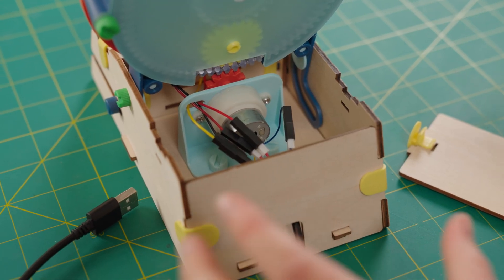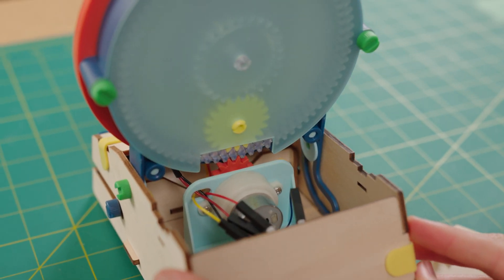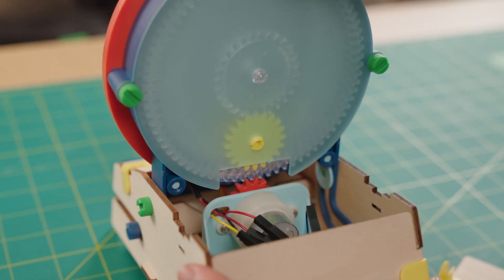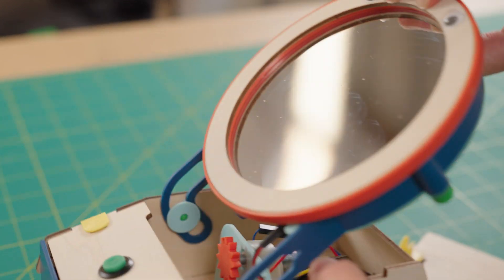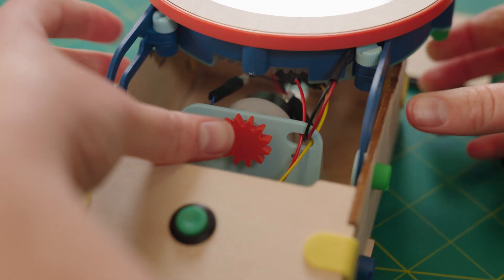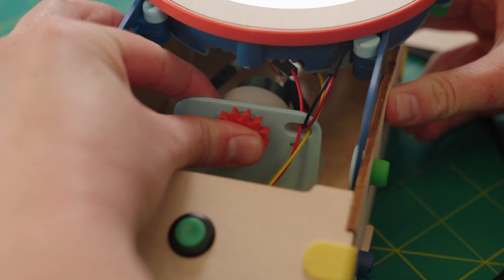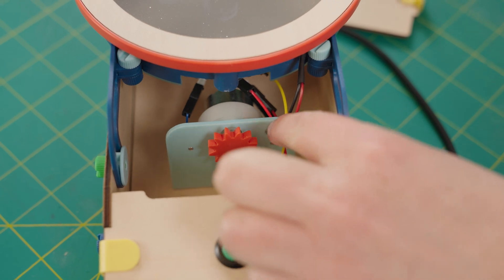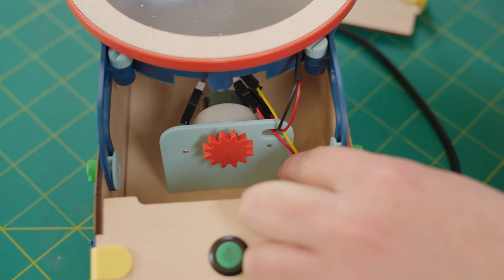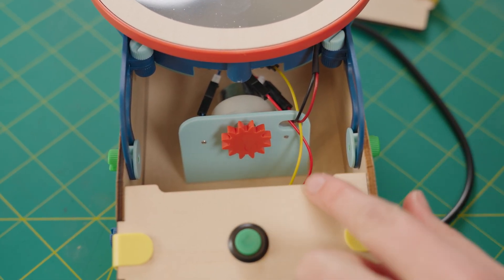Now, if the motor spins but the mirror doesn't, let's go ahead and check that all of these gears are meshing together and that the orange gear is firmly placed onto that motor. Finally, let's check that all of these wires are tucked to the side just like they are here and not getting in the way of that gear.